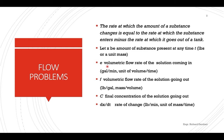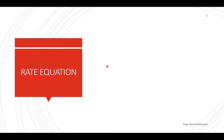If x is the amount of the substance at any time t, the rate of change will be dx/dt, in pounds per minute or any unit of mass per time. For the rate equation, based on the principle, dx/dt is equal to the rate in minus rate out.